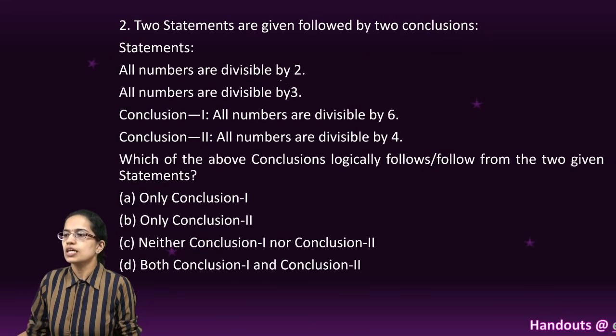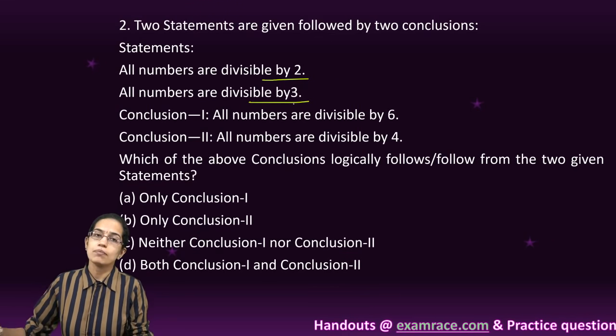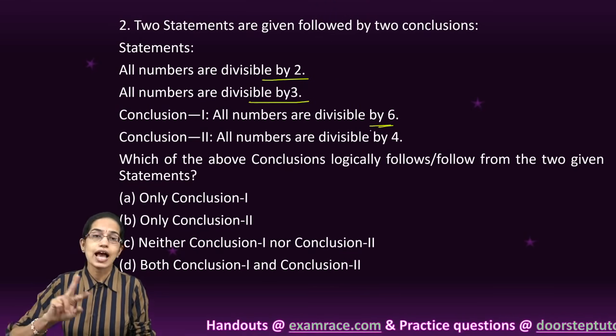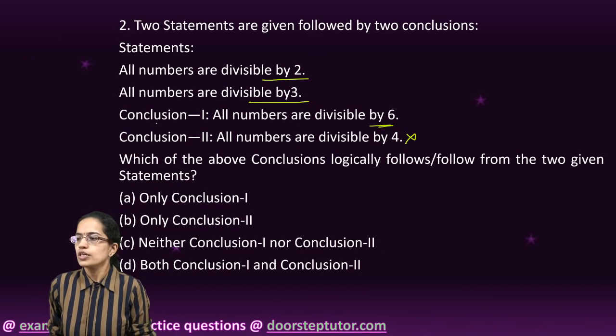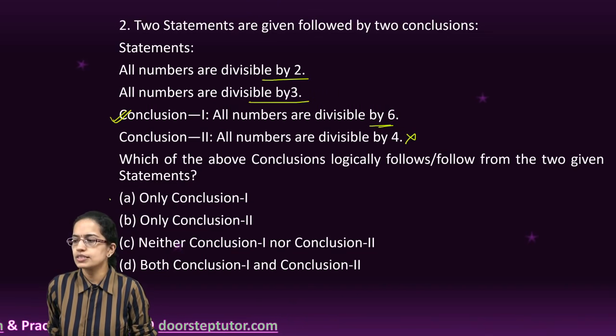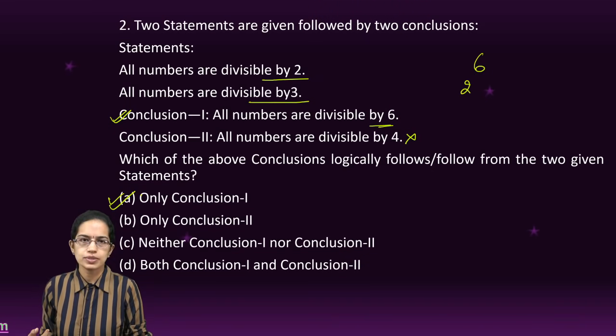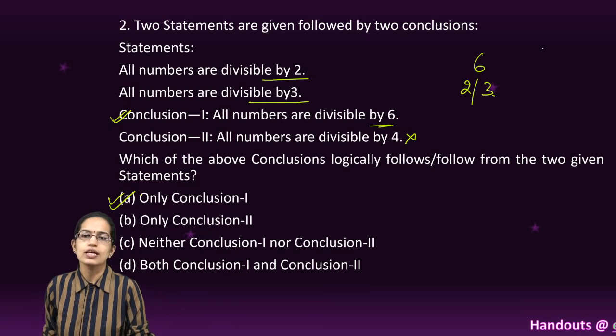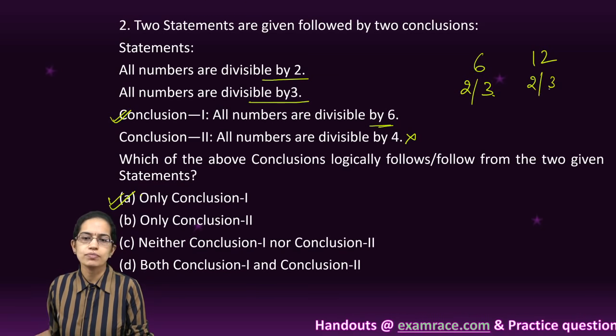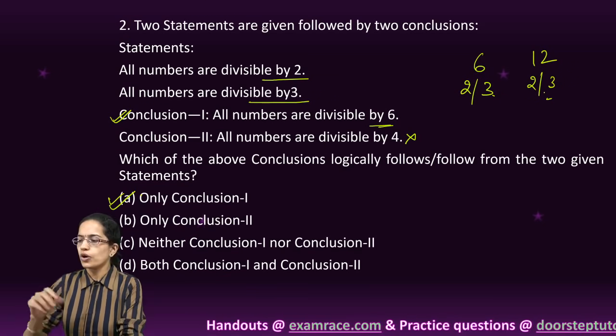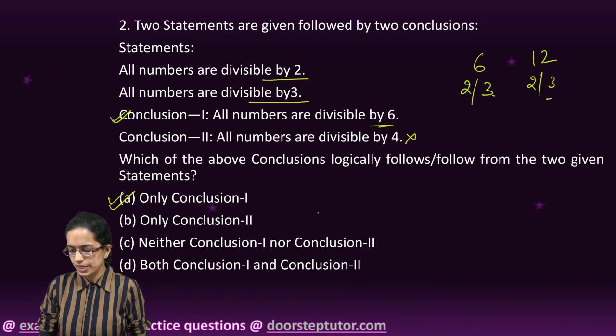Coming to the next question. Two statements are given: all numbers are divisible by 2, and all numbers are divisible by 3. If a number is divisible by 6, it must be divisible by both 2 and 3, but there's no such rule for 4. So conclusion 1 is the only correct conclusion. You would have A, only conclusion 1 would be correct.